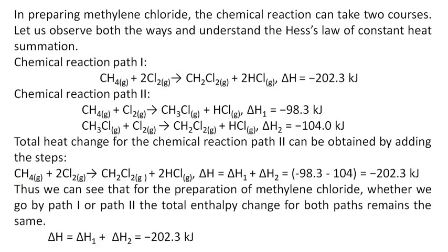In path 2, the total energy is the sum of energy generated in the first step and second step, which is minus 202.3 kJ. Thus we can see that for the preparation of methylene chloride, whether we go by path 1 or path 2, the total enthalpy change for both paths remains the same.